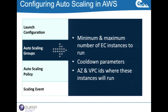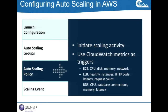The last things defined in auto-scaling groups — optional parameters — are which availability zone you're going to spin into and which VPC groups to use, since most people are using VPC these days.